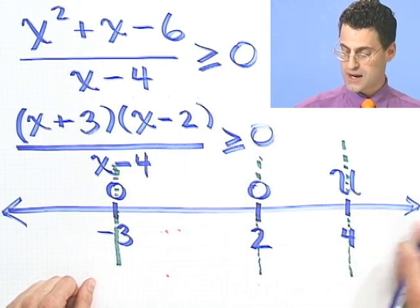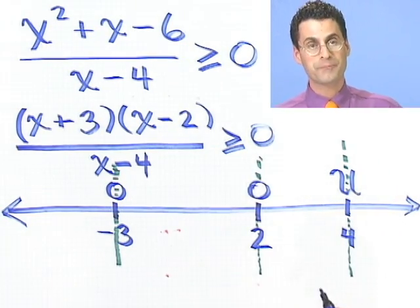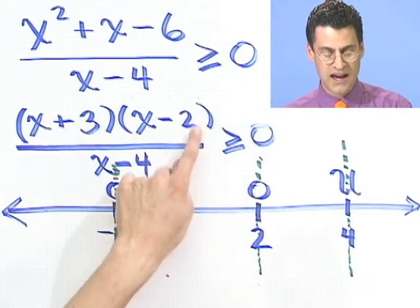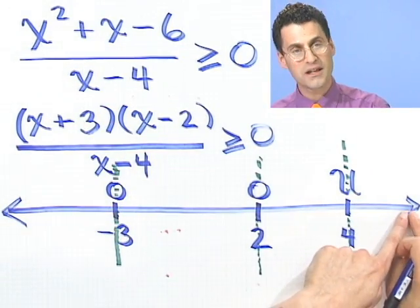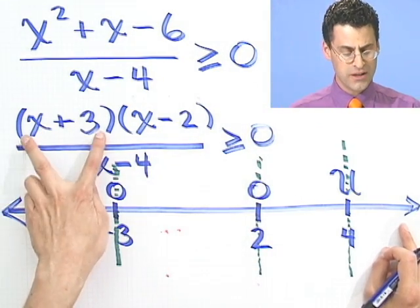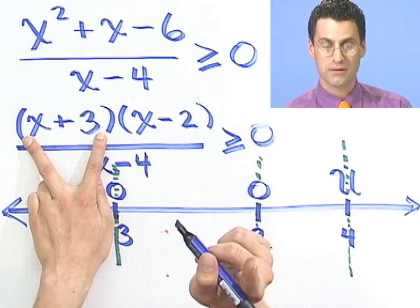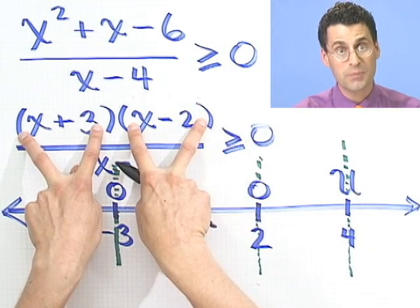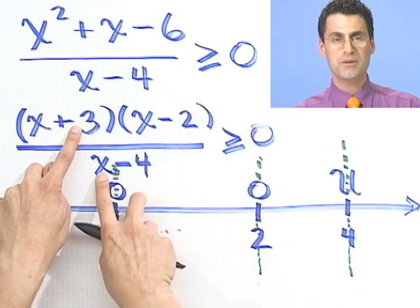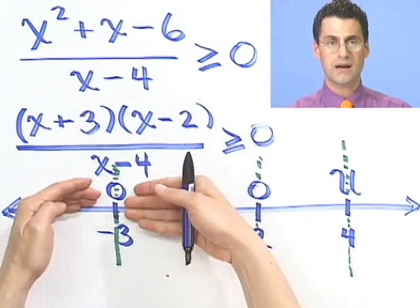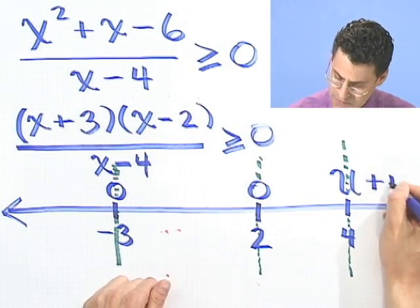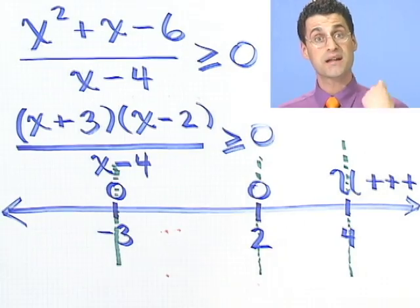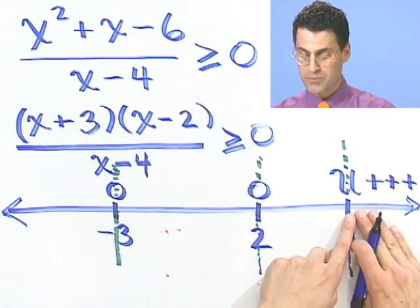So I want to pick a point way off here to the right of 4. You can pick any number as long as it's bigger than 4. To really try to drive this home, I'm going to pick a million. That sounds like a big number, and it is, but all I care about is the sign of this. I'm going to now plug in a million wherever I see an x. If I put a million in here, a million plus 3, that's positive. If I put a million in here, a million minus 2, that's still positive. A positive times a positive, that's still positive. So I've got a positive on the top. If I take a million and subtract 4, that's positive. So I see positive divided by a positive. Well, that's positive. You see how the fact that it was a million really didn't make much of a difference at all? So that whole region is a positive region. Am I going to include that? Absolutely, because I'm looking for where this thing is positive or 0. So I'm going to include that. That's a happy answer.